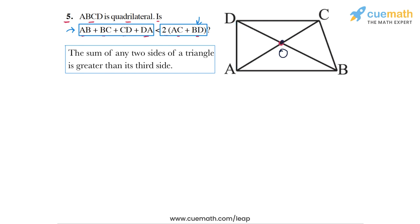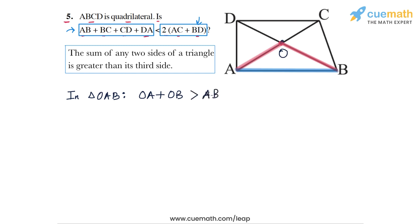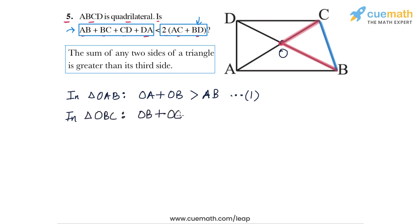In triangle OAB, the sum of the two sides OA and OB will be greater than the third side AB. Let's call this inequality 1. Now applying this property to the second triangle OBC: in triangle OBC, OB plus OC will be greater than the third side BC. Let's call this inequality 2.